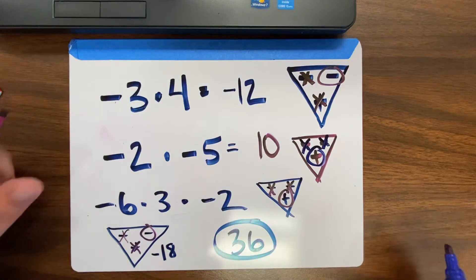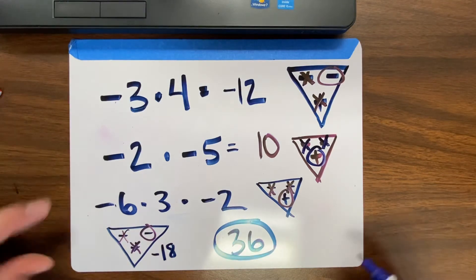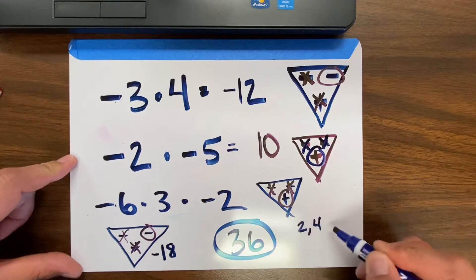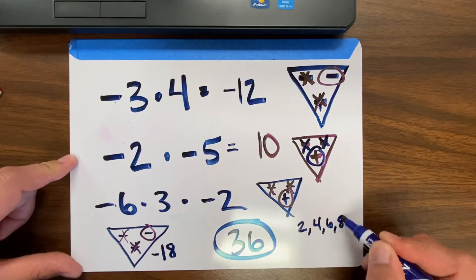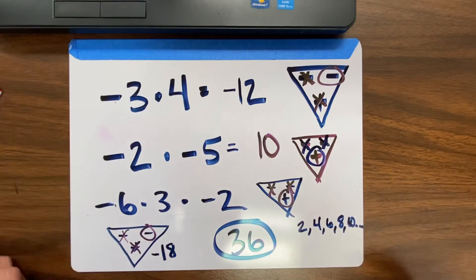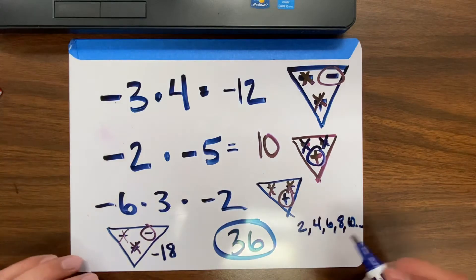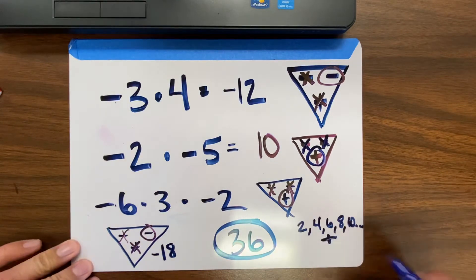One more trick for knowing if it's positive or negative. If there are 2, 4, 6, 8, 10, and so on numbers involved, then the answer will always be positive.